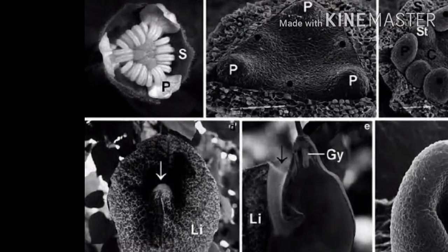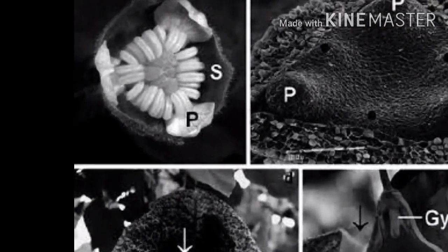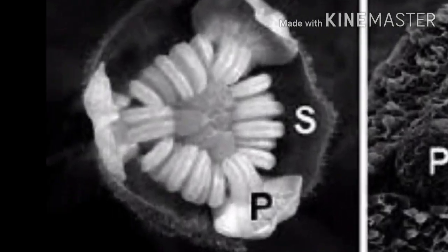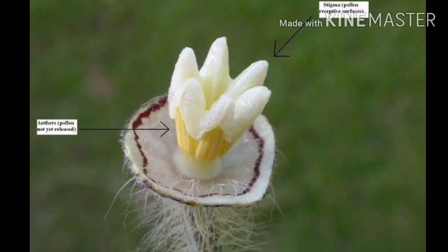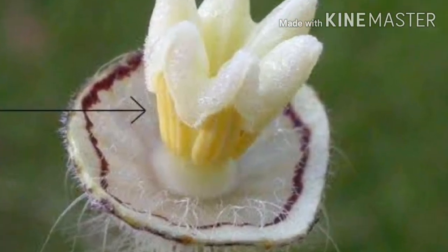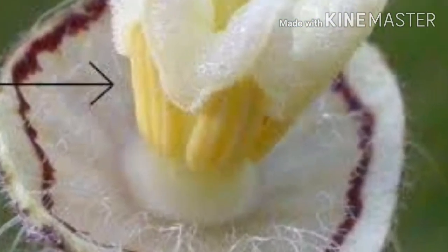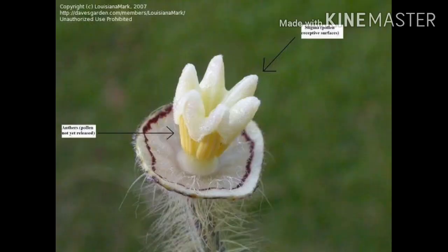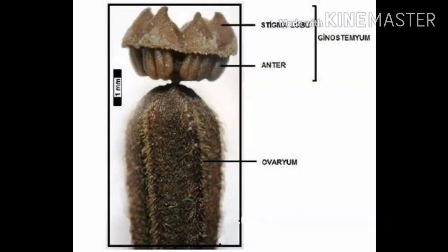Androecium consists of six to thirty-six stamens, free or adnate to the style, producing a column or gynostemium which sits around the apex of the ovary or stylar column.